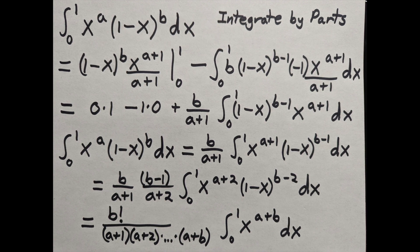So if we repeat that b times, the numerator becomes b factorial. The denominator is a plus 1 times a plus 2 up to a plus b, which can be written as a plus b factorial over a factorial.